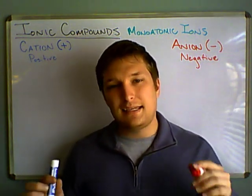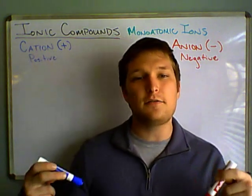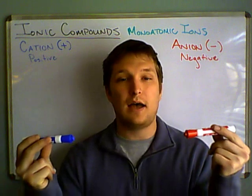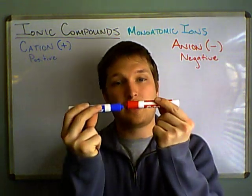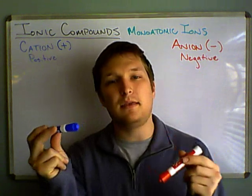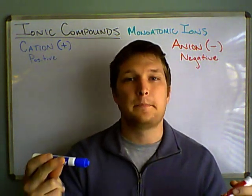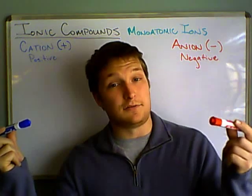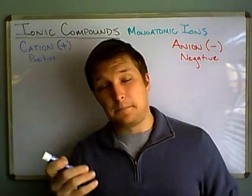So, cations and anions, you can think of electric charge a lot like magnets. If you have a north pole and a south pole, they're going to attract each other. Well, it's the same thing with charges. If you have a positive charge and a negative charge, they're going to attract each other.